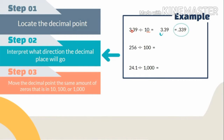Next example: 256 divided by 100. As we learned from the last lecture, we do not physically see a decimal point — we know it belongs to the right of the number. Step one: locate the decimal point. Step two: the decimal goes to the left. Step three: in hundred we have two zeros, so the decimal point moves two places to the left. The answer we get is 2.56.